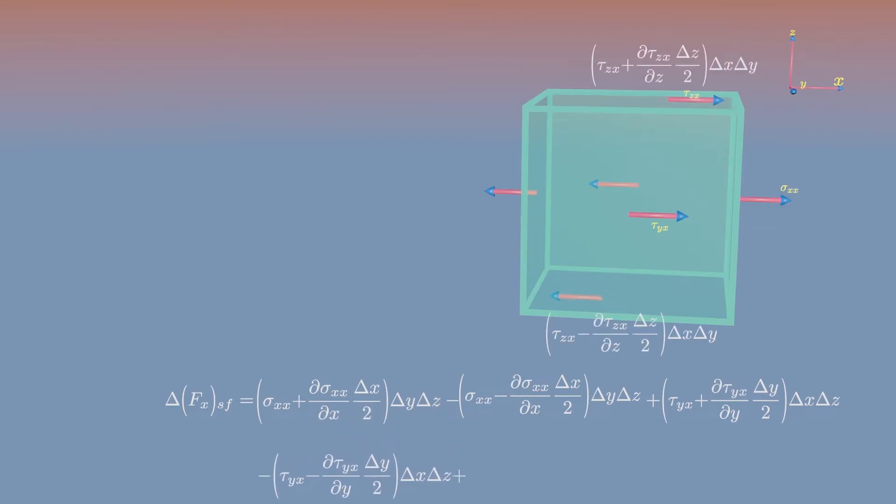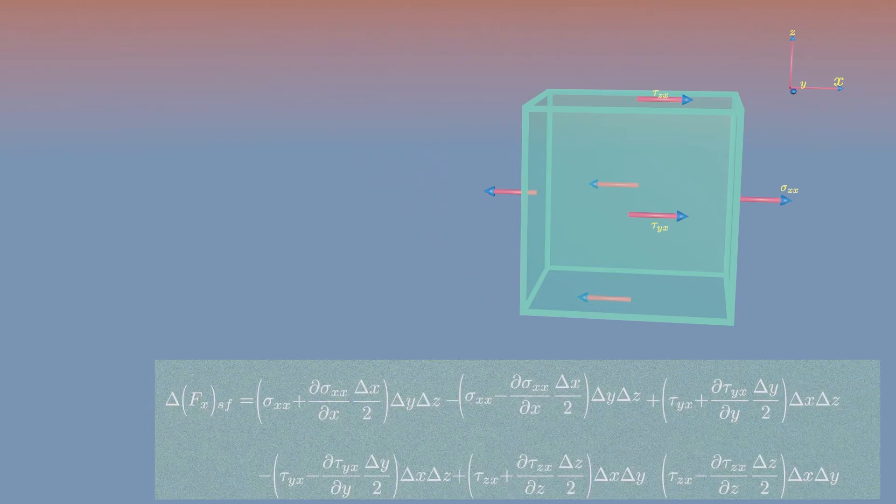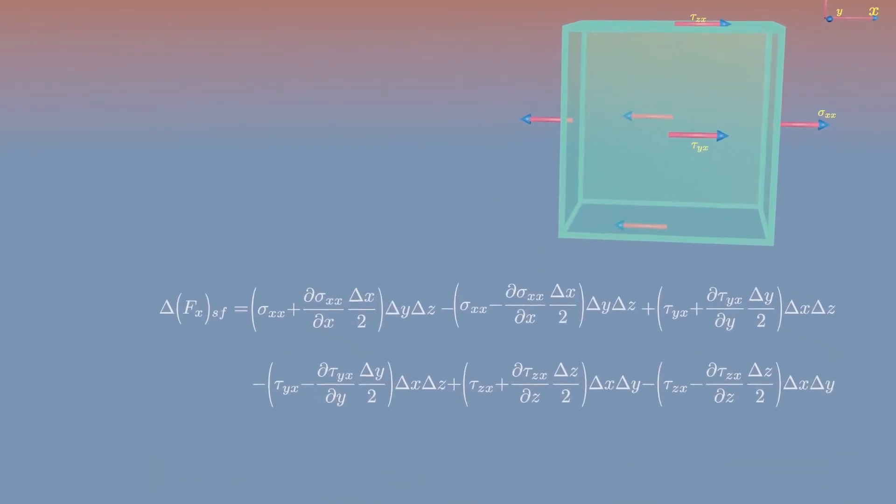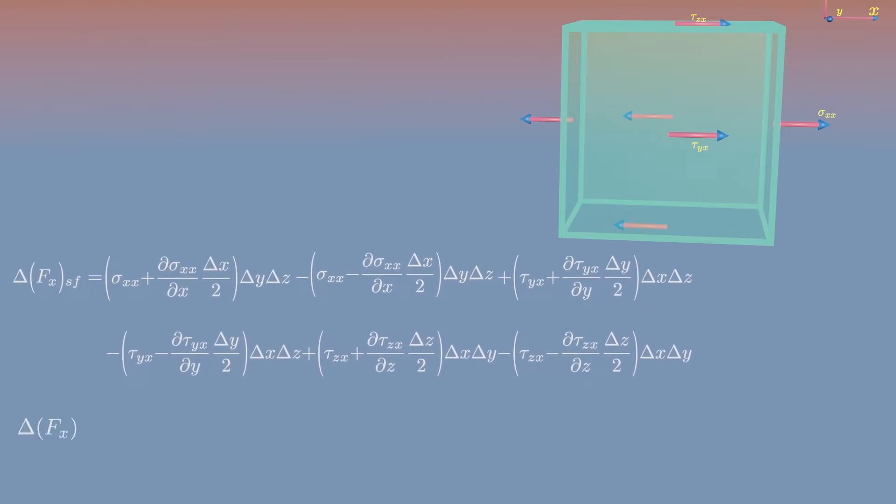The resultant surface force in the X direction created by tangential force on upper and lower surfaces. The resultant surface force in X direction would be... By collecting terms this can be simplified.